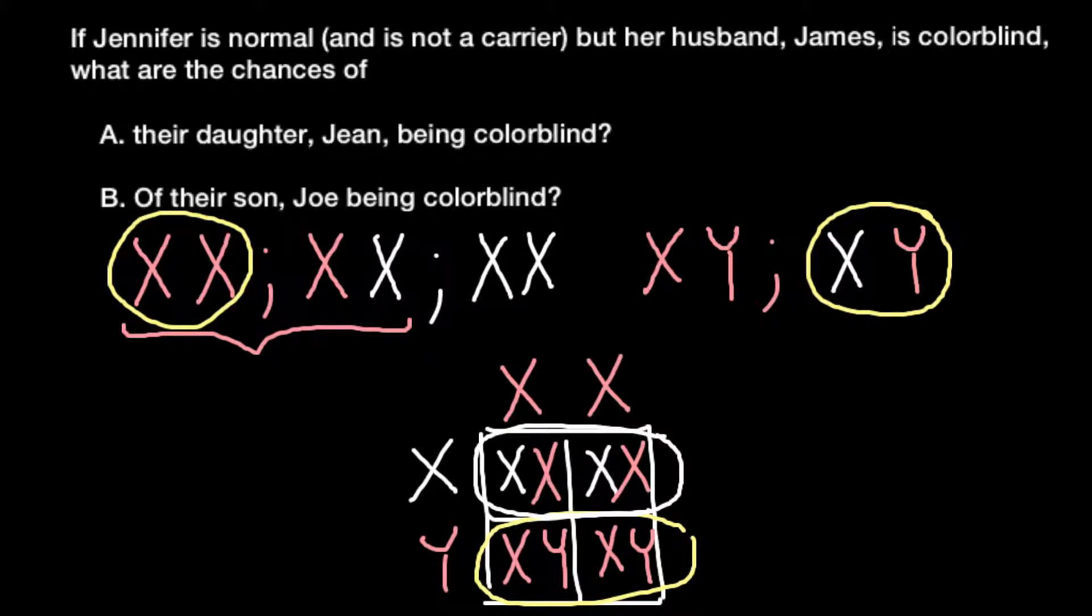Now we can answer our question: the daughter Jean being colorblind. As you see, 100% of the daughters in this family would be carriers but wouldn't be colorblind.